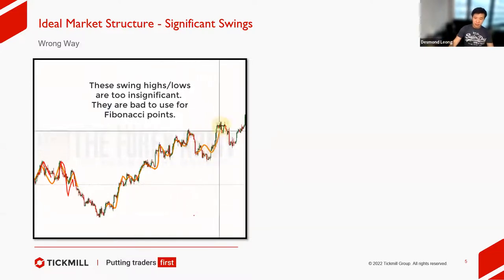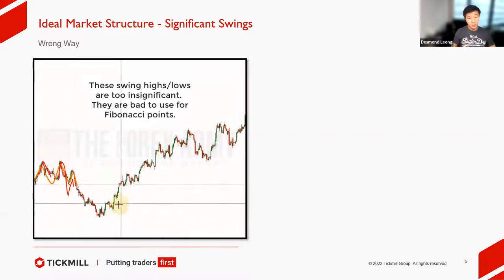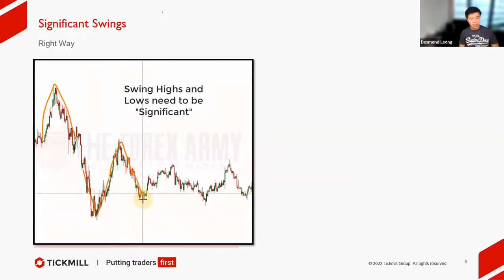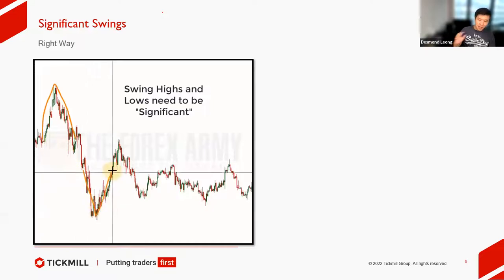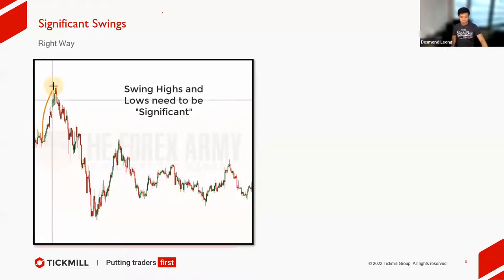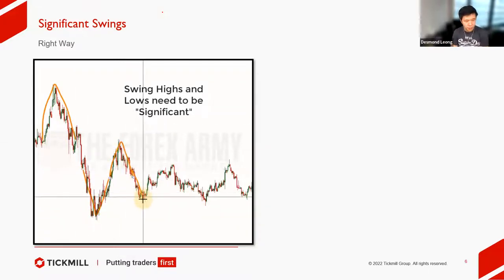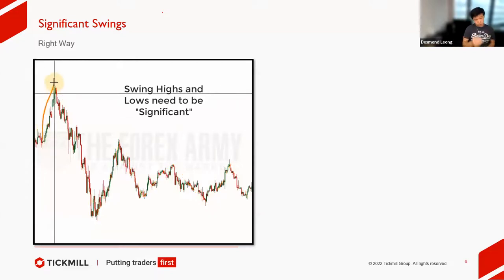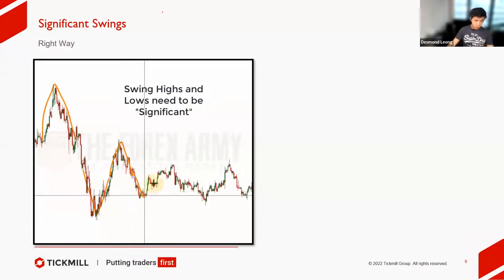Insignificant swings are bad for Fibonacci. On the flip side, significant swings are big enough that you can use them as a start and end for your Fibonacci retracement. You're always looking for significant levels. For time frame suitability, I usually use Fibonacci on H1 as the lowest — I also use H1, H4, and D1 — but I do not go into the wild west of M1 and M5 charts.